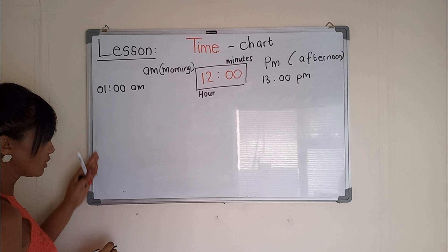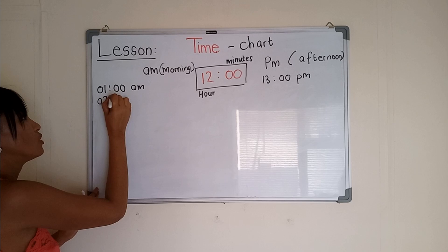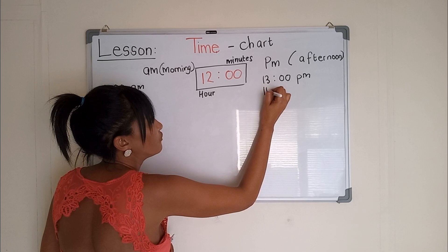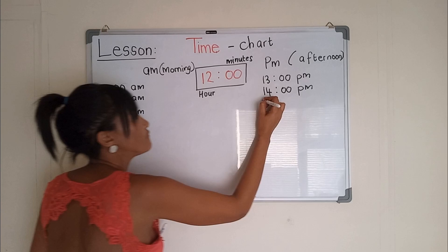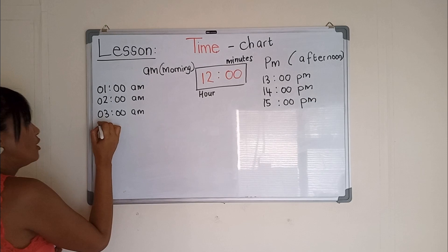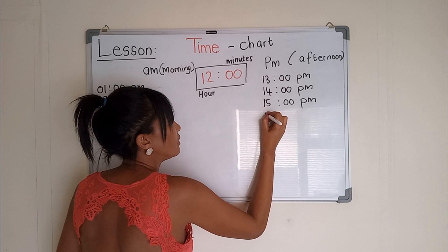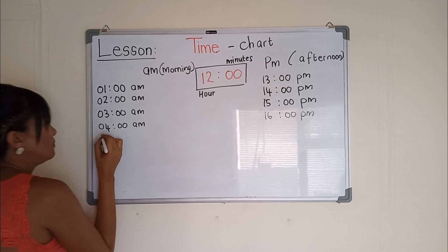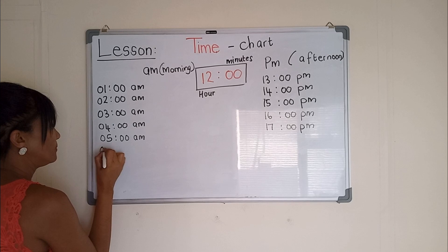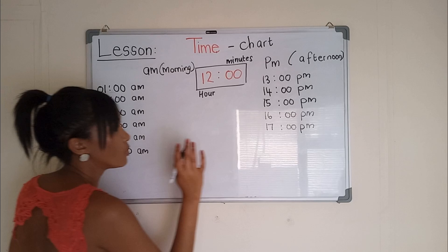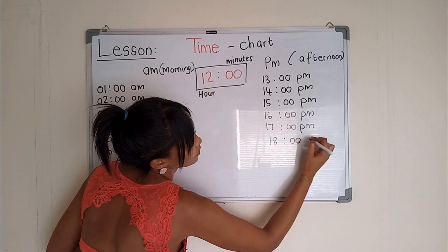So I'm going to write everything down in order. It's 02 colon 00 AM, and then in the afternoon it will be 14 colon 00 PM. 3 o'clock in the morning will be 15:00 in the afternoon. 4 o'clock in the morning will be 16:00 in the afternoon. 5 o'clock in the morning will be 17:00 in the afternoon. 06 colon 00 AM is the morning, and in the afternoon 18:00 PM.